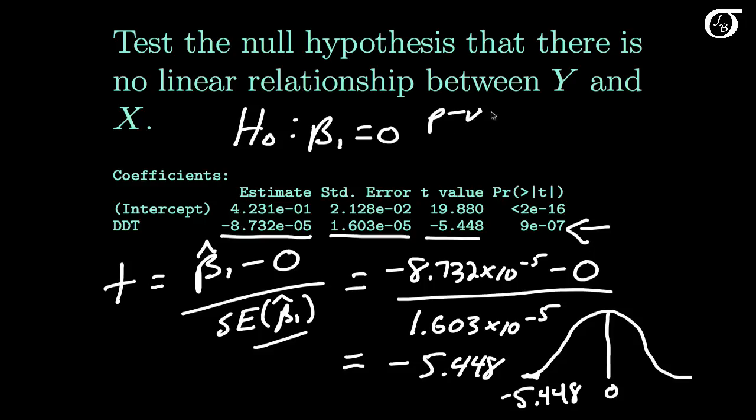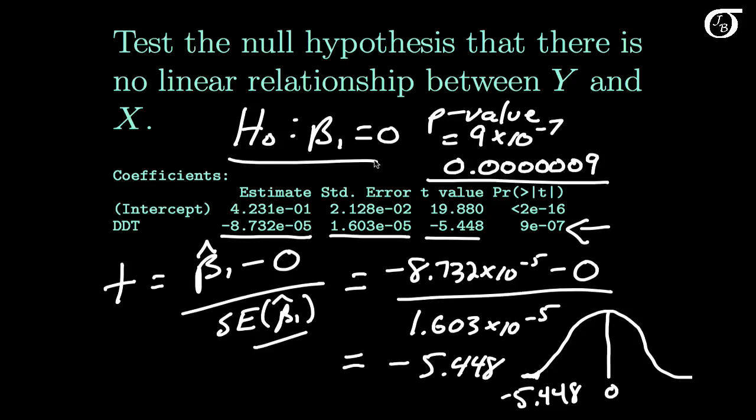So the p-value of this test, we didn't really have to do any of those calculations, because our p-value is equal to 9 times 10 to the negative 7, or 0.0000009, a very small number, a very, very small p-value, giving us very, very strong evidence against this null hypothesis.